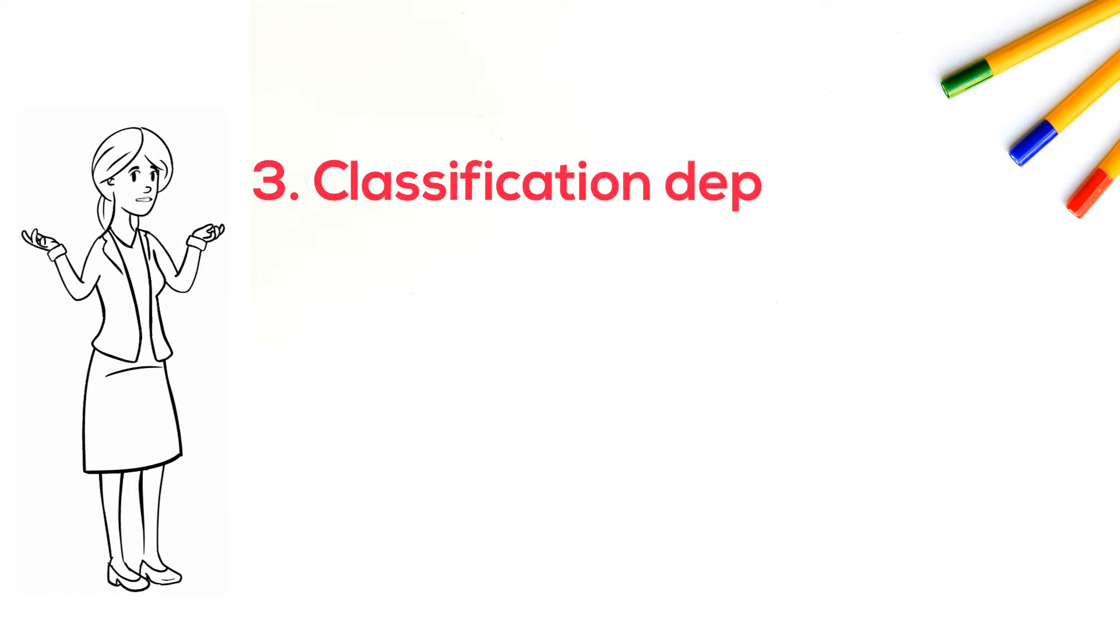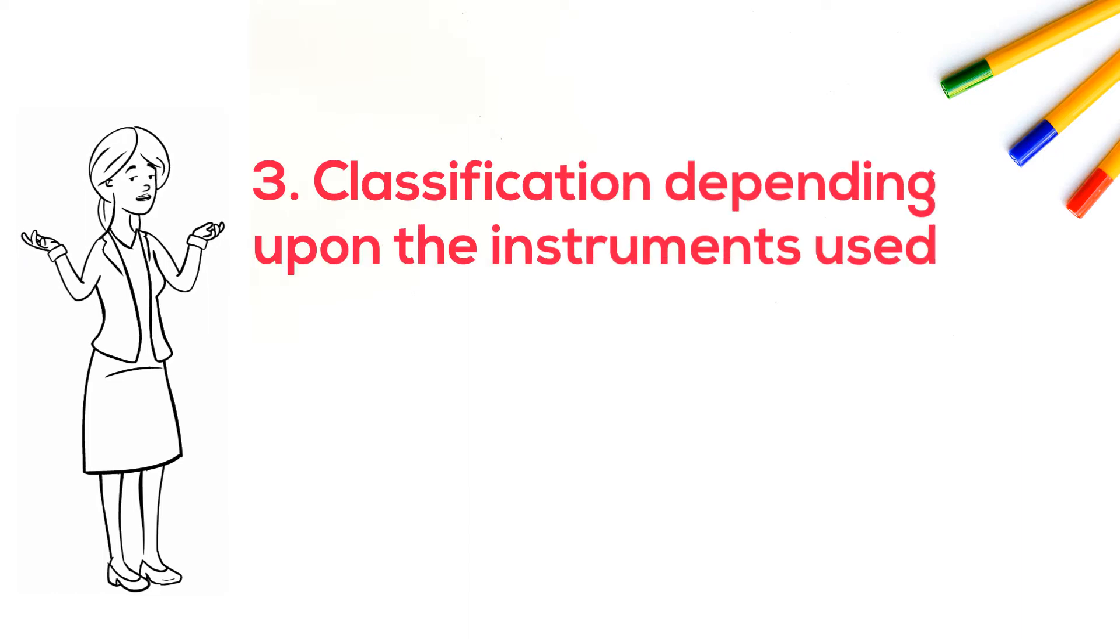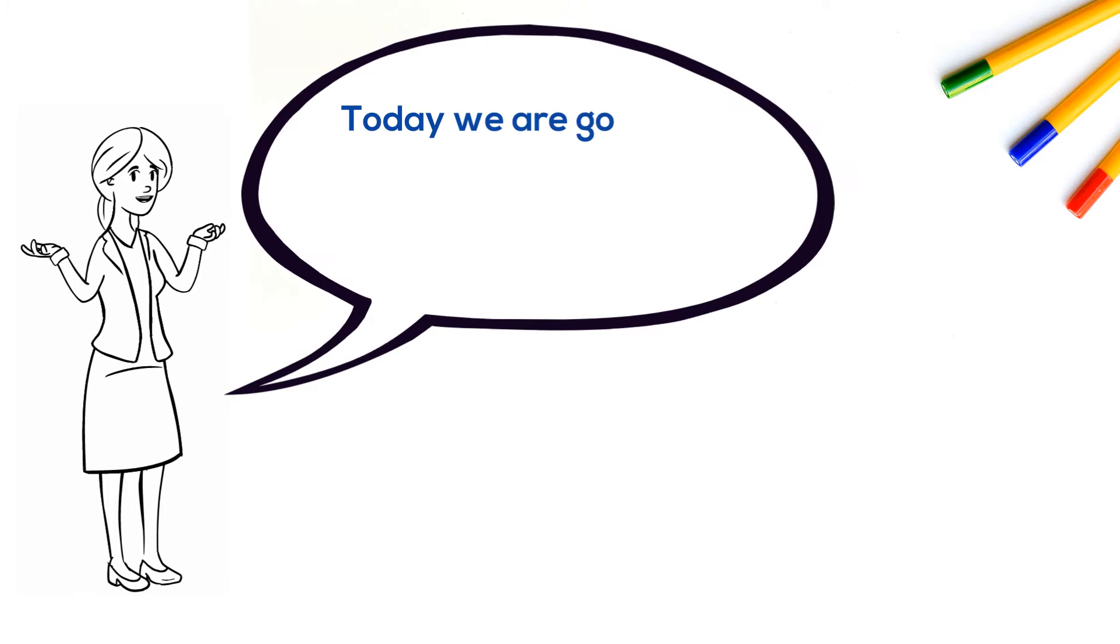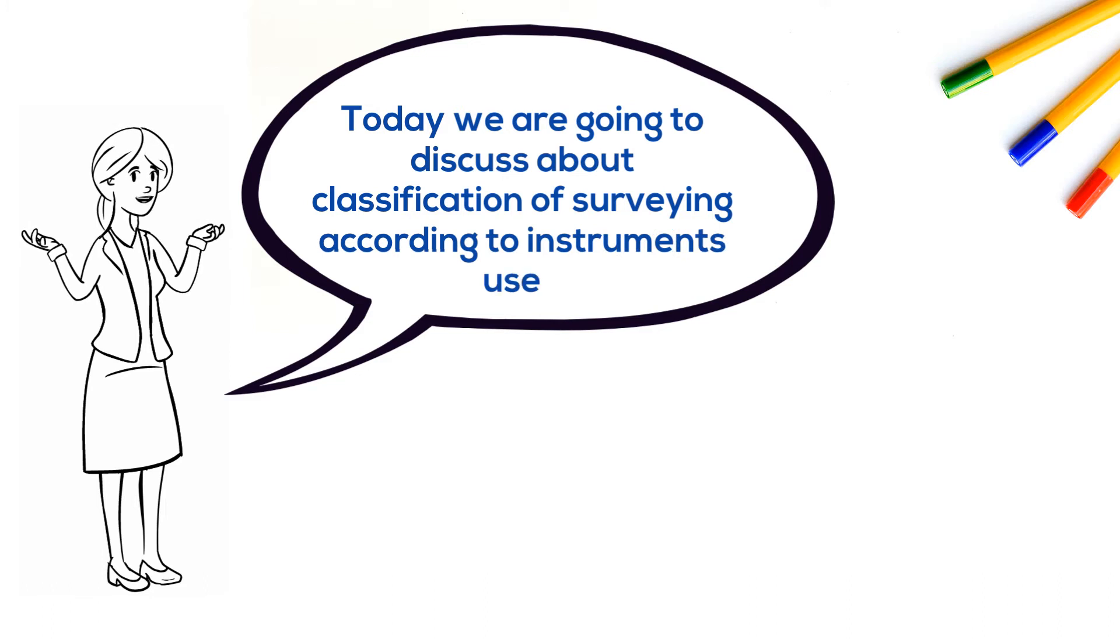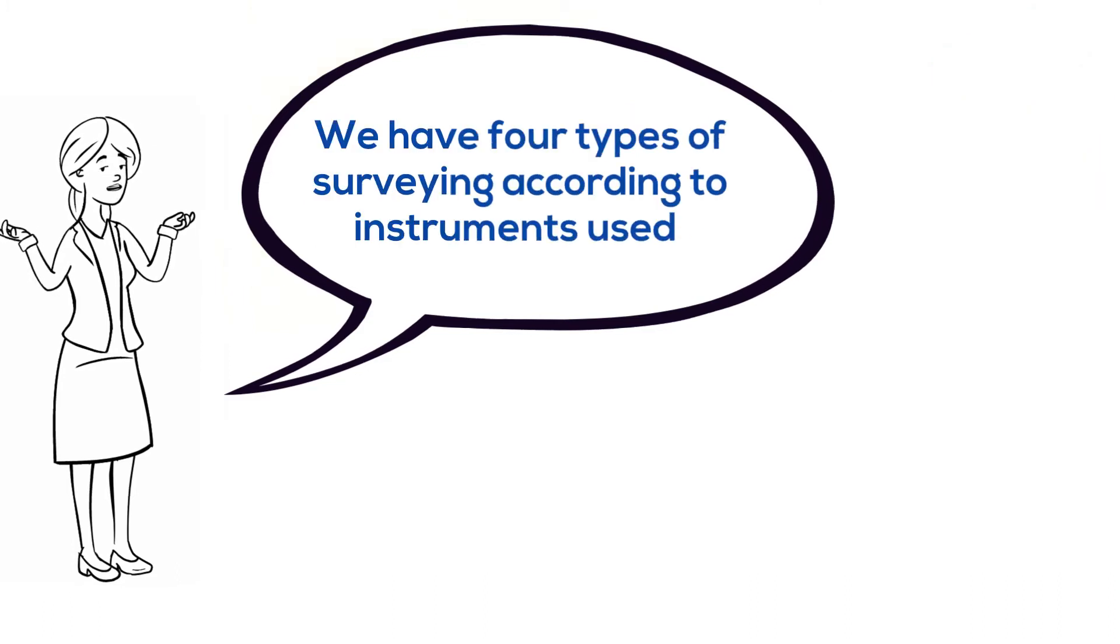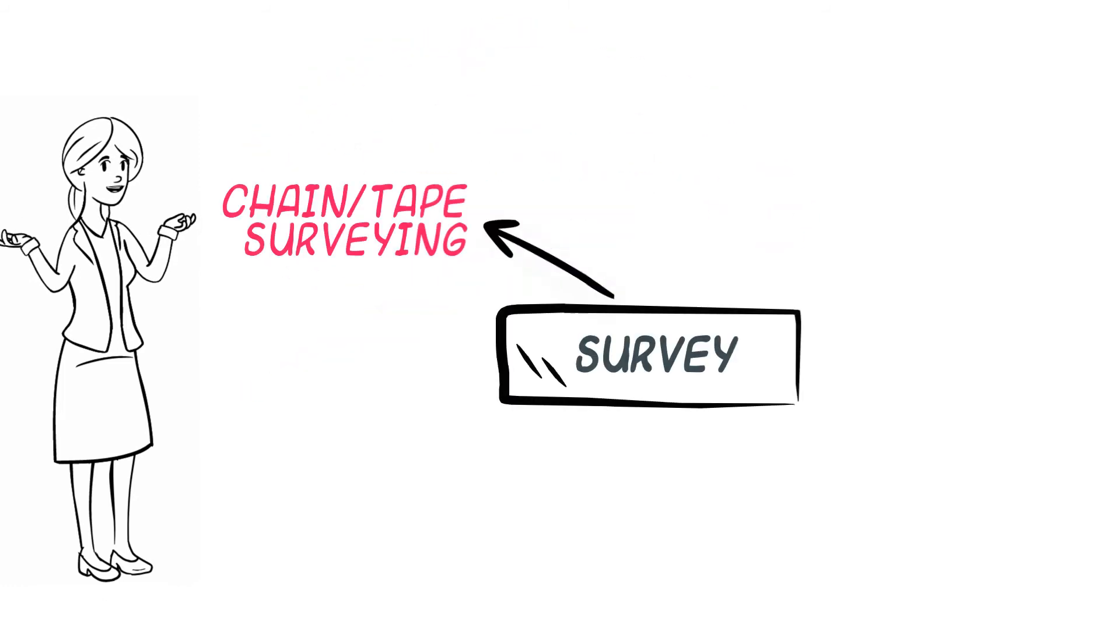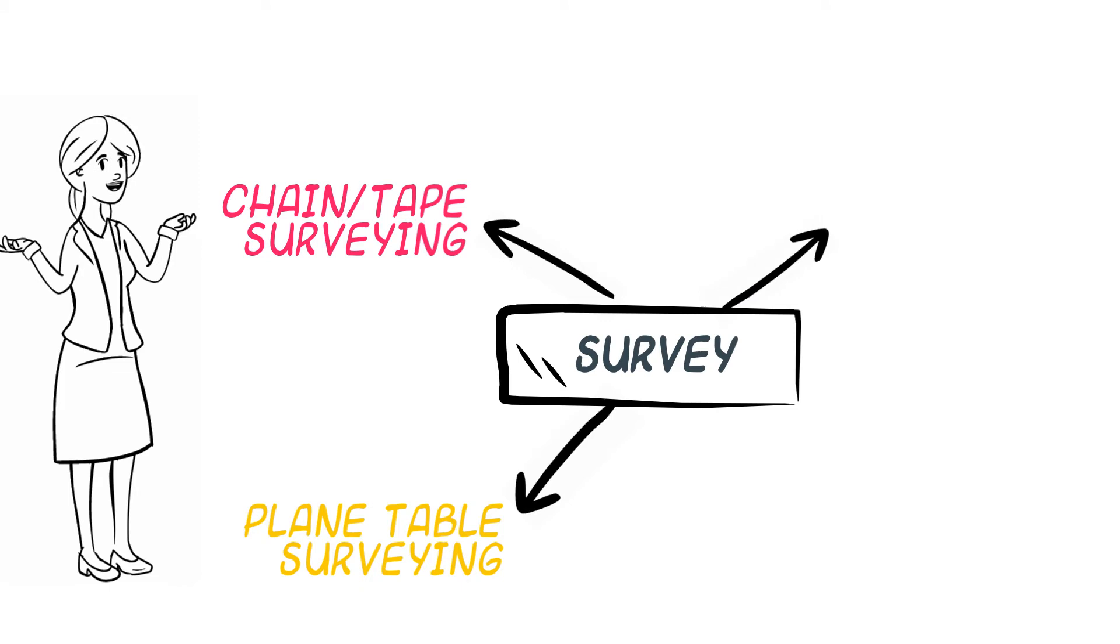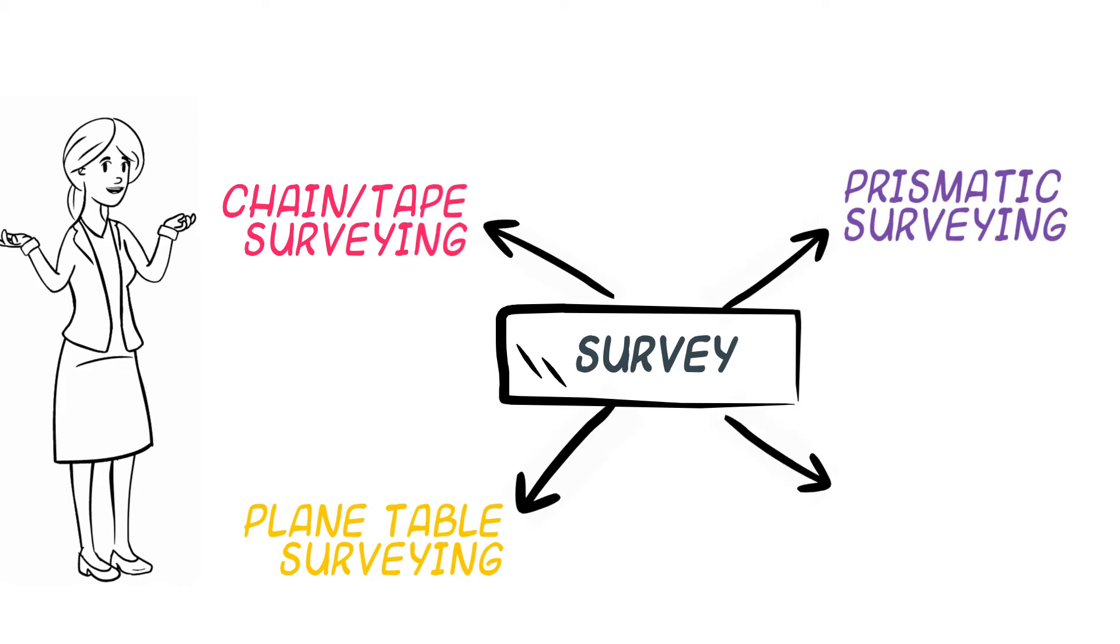Classification depending upon the instrument used. Today we are going to discuss classification of surveying according to instruments used. We have four types of surveying according to instruments used which are chain or tape surveying, plane table surveying, prismatic surveying, and leveling.